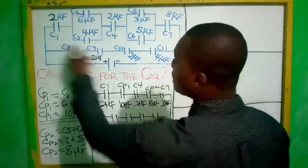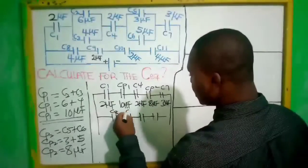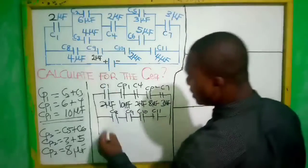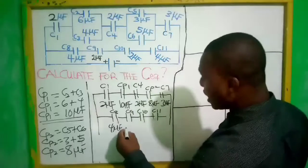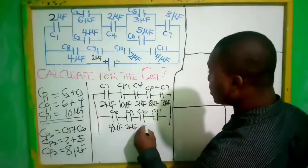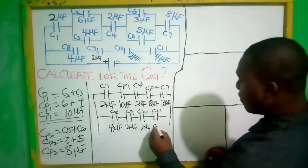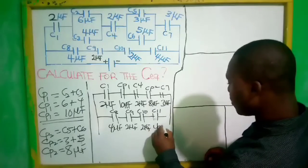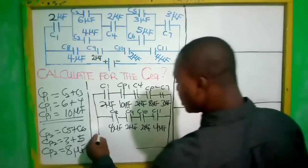The bottom line has C8, C9, C10, and C11. C8 is 4 microfarads, C9 is 2 microfarads, C10 is 2 microfarads, and C11 is 4 microfarads. This is how our redrawn circuit looks.